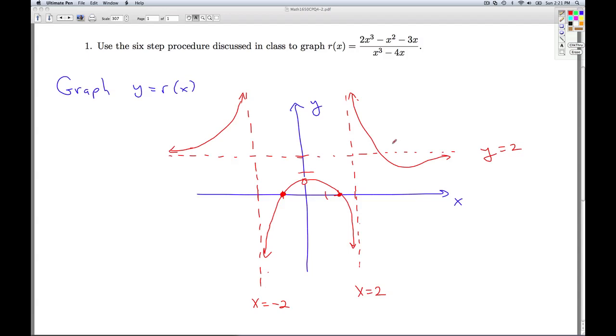Now you might say, wait a minute, I didn't think you were allowed to cross asymptotes. Well, you're never going to be able to cross vertical asymptotes in a rational function because in a rational function the vertical asymptotes come from places that aren't in the domain. But you can cross a horizontal asymptote.